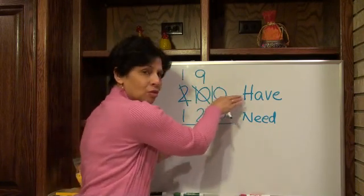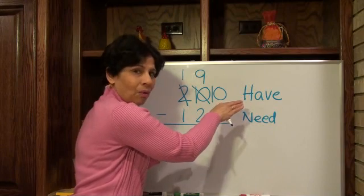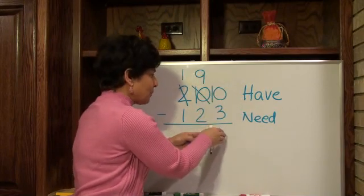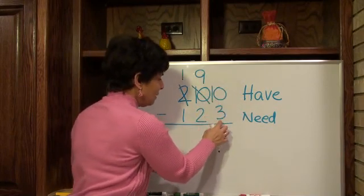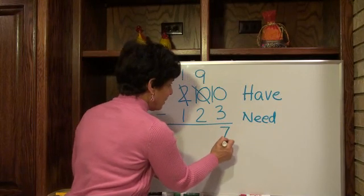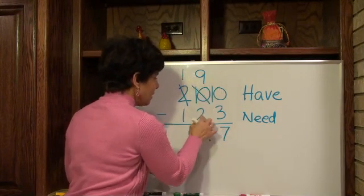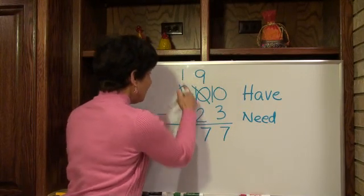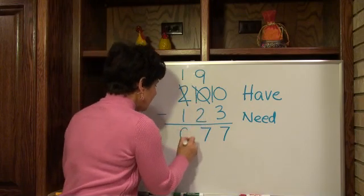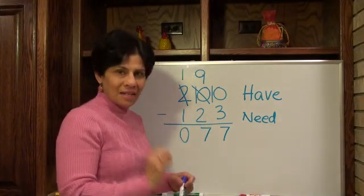Do I need to give any sugar to anybody over here? No. So now let me do my subtraction. Ten take away three is seven. Nine take away two is seven. One take away one is zero. So your answer is seventy-seven.